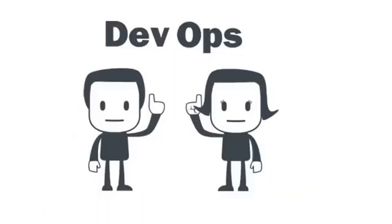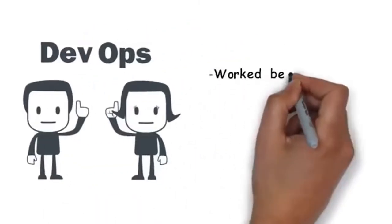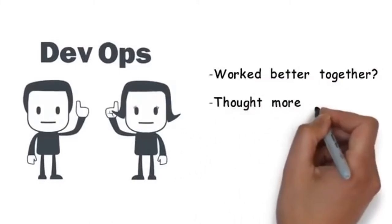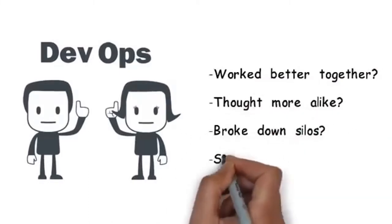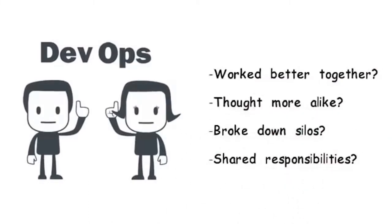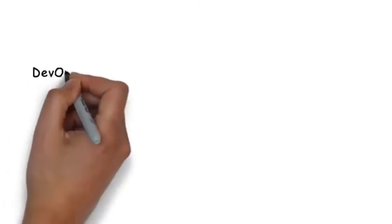What if Dave the developer and Anna from operations work better together? Thought more alike. Broke down silos. Shared responsibilities. This would require them to change their mindset on how dev and ops work. So what is DevOps?